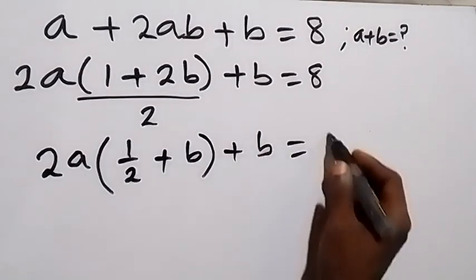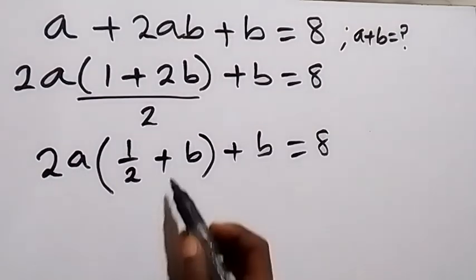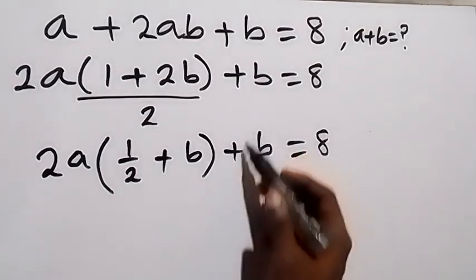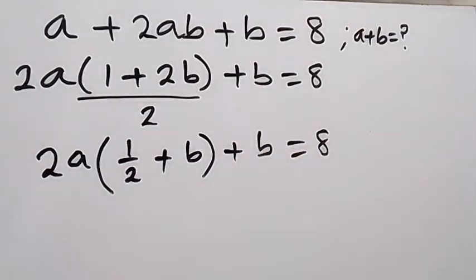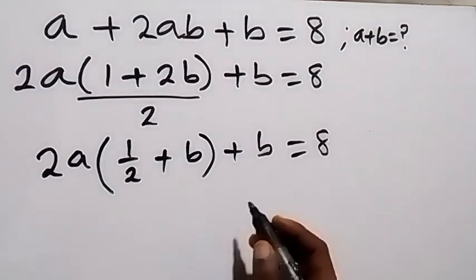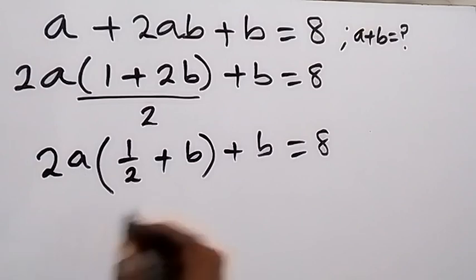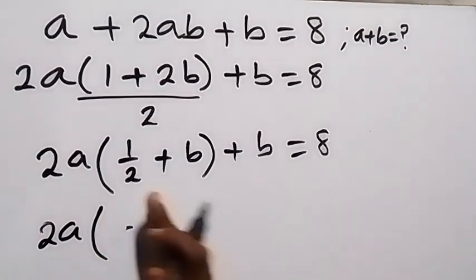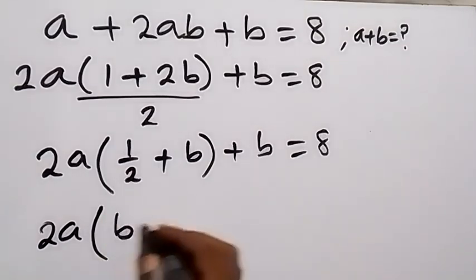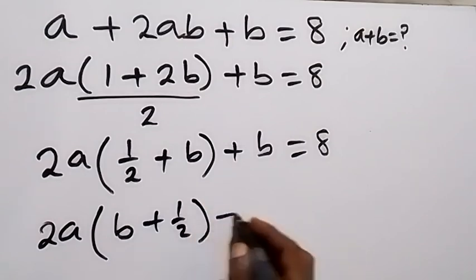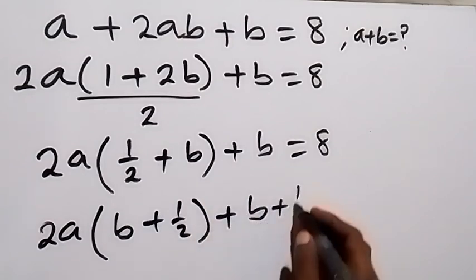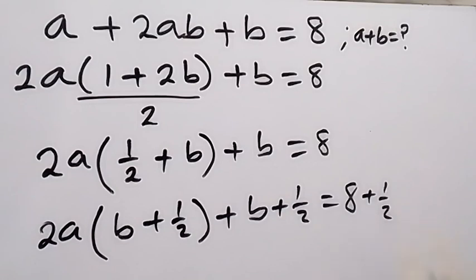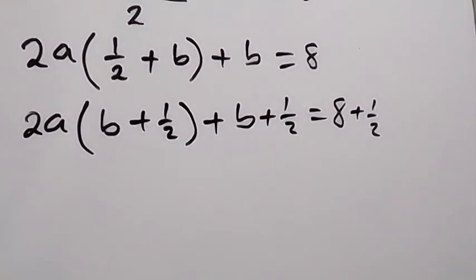We get 2a into bracket: one half, then plus 2b divided by 2 — that will be b — then plus b, equals 8. We have half plus b, same thing as b plus half. So we can make this side also in the form of b plus half, by adding half to both sides. This will give us 2a into bracket (b plus half).